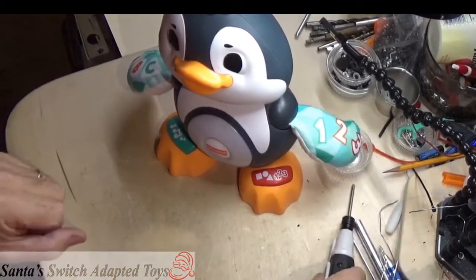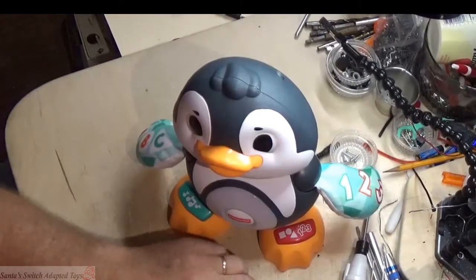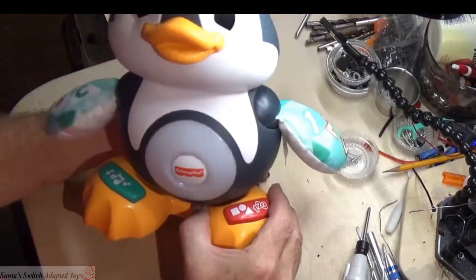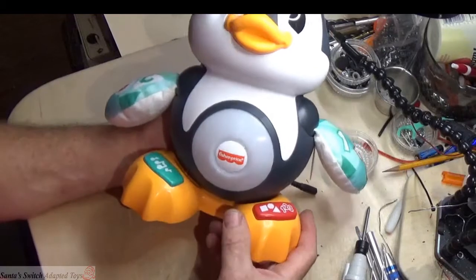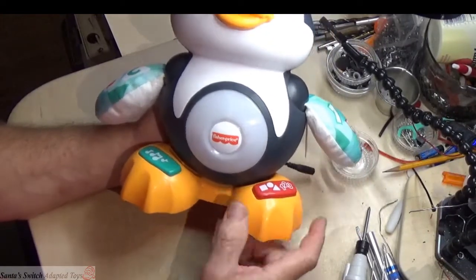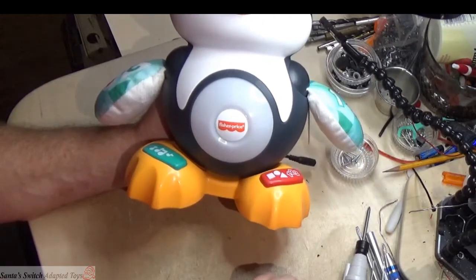Hey, hello everybody. This is Santa Jerry from Santa's Switch Adapted Toys. Today we're going to modify and add some cabling to a Fisher Price Penguin. This has two buttons on it, similar to the sloth, so it's probably going to be similar to that, but let's find out where the connections are inside.